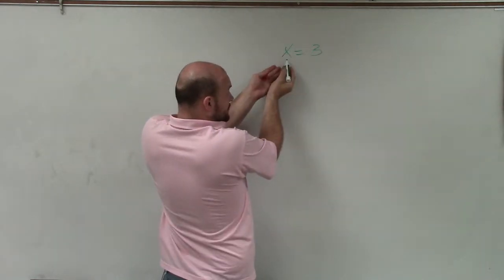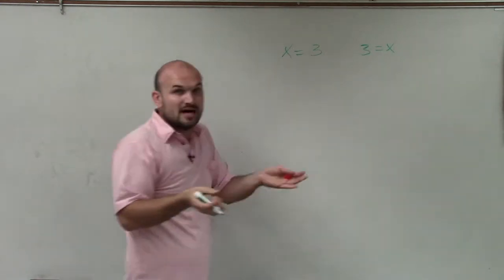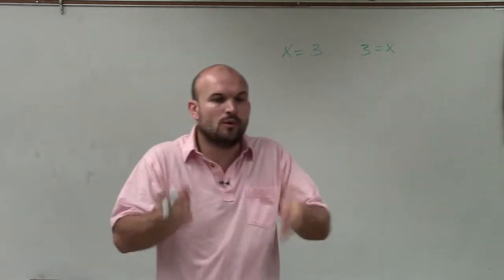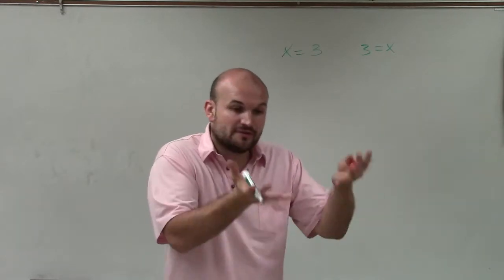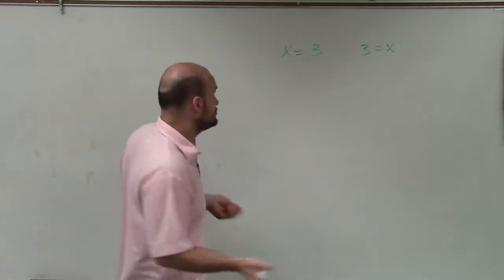Well, the variable's by itself, right? It's on the left side. That's cool. It could be on the right side. It could be 3 equals x. But the variable's by itself. Because when we're solving an equation, we want the variable, the value of the variable, to be equal to a value. And that's when we know we have the solution.